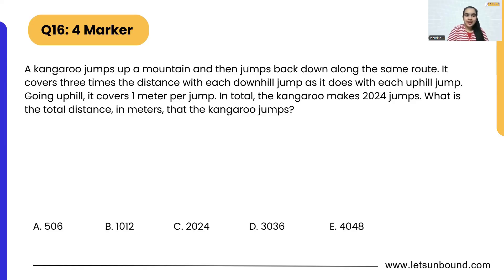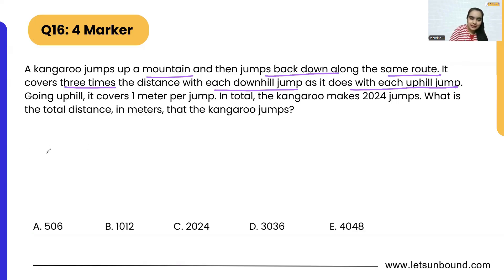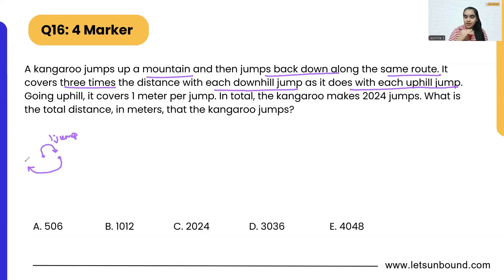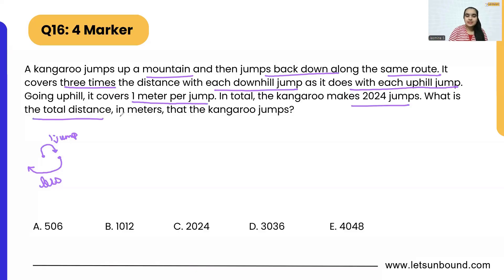A kangaroo jumps up a mountain and then jumps back down along the same route. It covers three times the distance with each downhill jump as it does with each uphill jump. For example, if the kangaroo makes one jump going up, coming down it will cover three times that distance. It covers one meter per jump, and in total the kangaroo makes 2024 jumps. We need to find the total distance in meters.